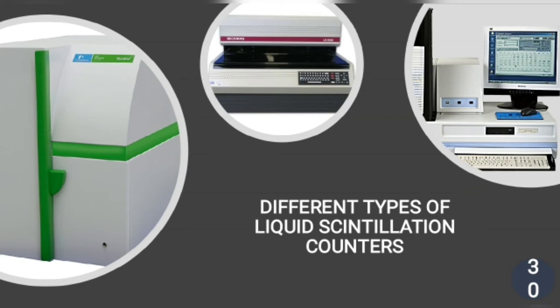The liquid scintillation detectors are much larger in size compared to the other two instruments, but they represent the most efficient counting system. There are many other instruments to measure radioactivity, but we have discussed three of them. Next I welcome Marin Martin to present her topic.